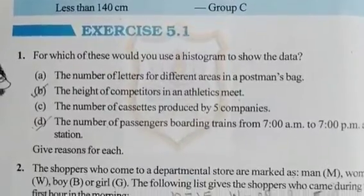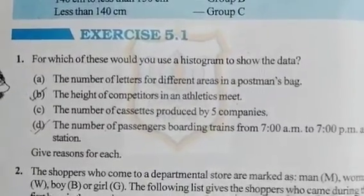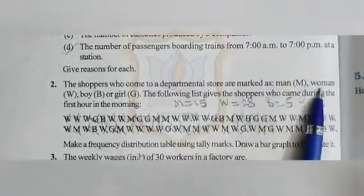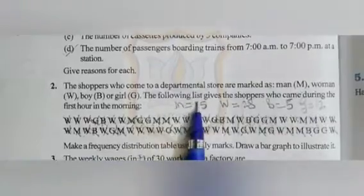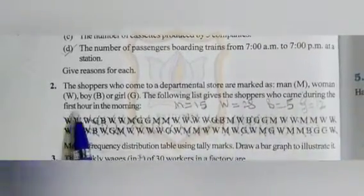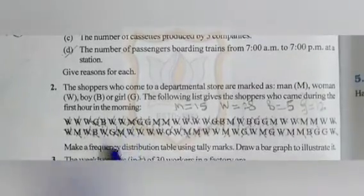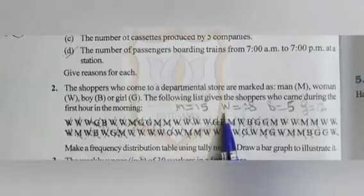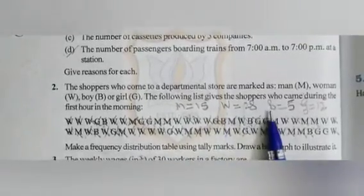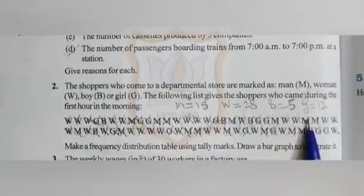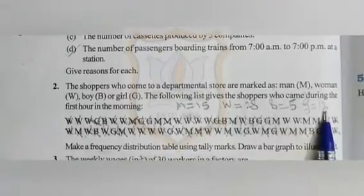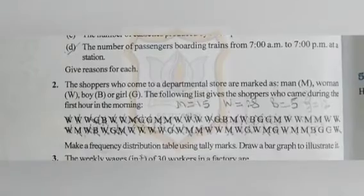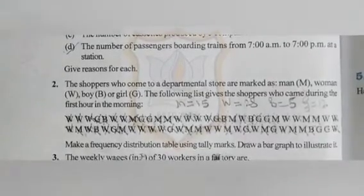Next sum: the shoppers who come to a departmental store are marked as men, woman, boy, or girl. The following list gives the shoppers who came during the first hour in the morning. When you count, you find out that men M equals 15, women W equals 28, boys B equals 5, and girls G equals 12. Make a frequency distribution table using tally marks and draw a bar graph to illustrate it.